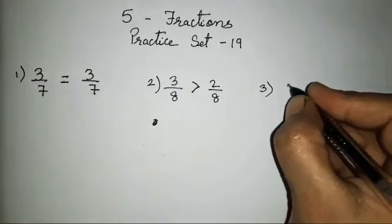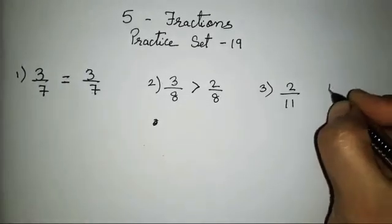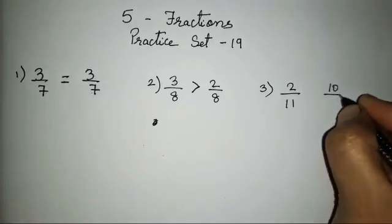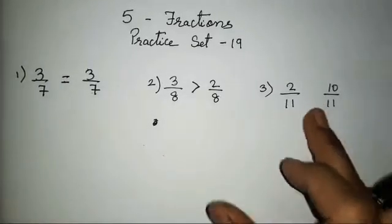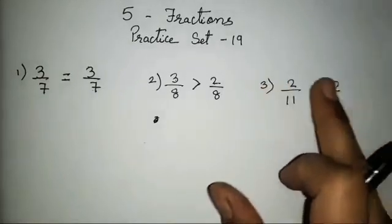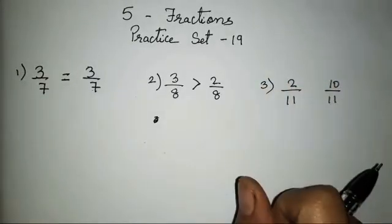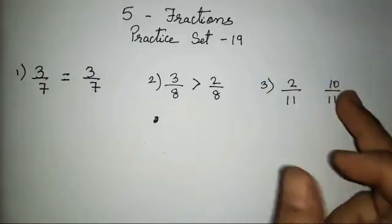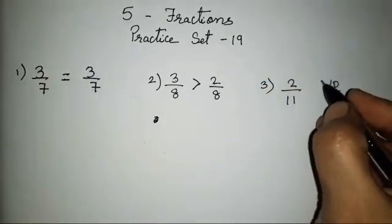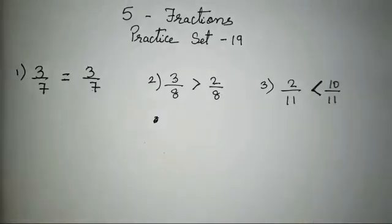The third one is 2 upon 11 and 10 upon 11. Again the denominators are same but the numerators are different. The greater numerator is 10, so you will show the greater sign on the second fraction's side.